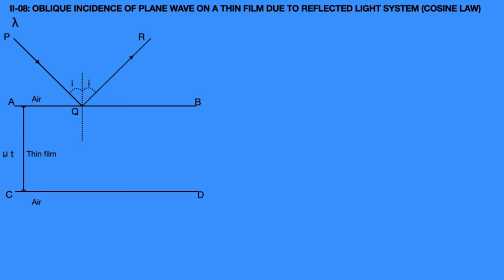Assume this reflected light ray QR is ray 1. At point Q, some part of PQ light ray is refracted into the film and is incident on the lower surface of the film at S. Draw a normal at point S, which touches the upper surface of the film at N. The QS light ray makes an angle R with the normal at point Q. Similarly, at point S, the light ray also makes an angle R with the normal. Assume this light ray is ray 2.